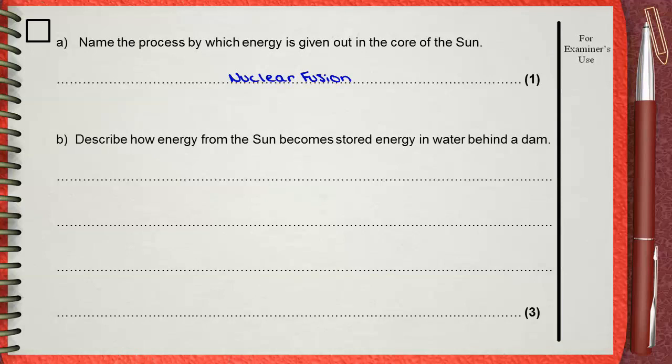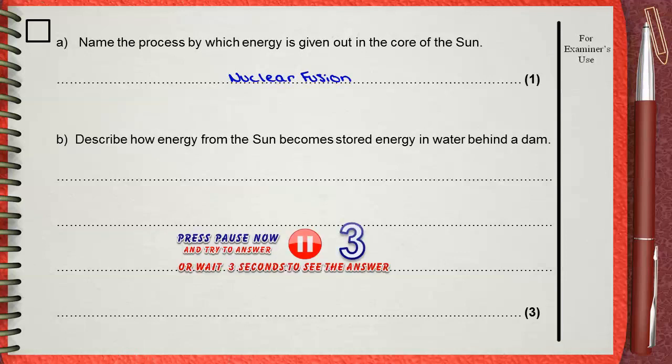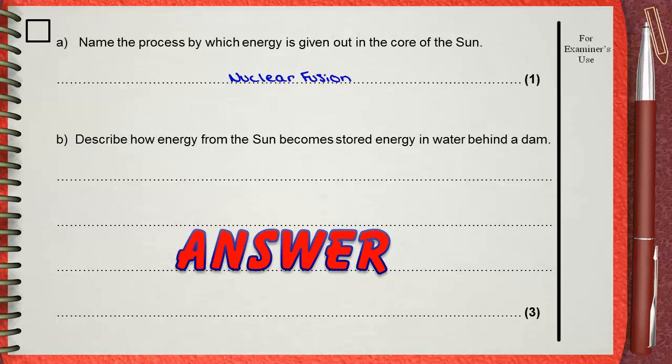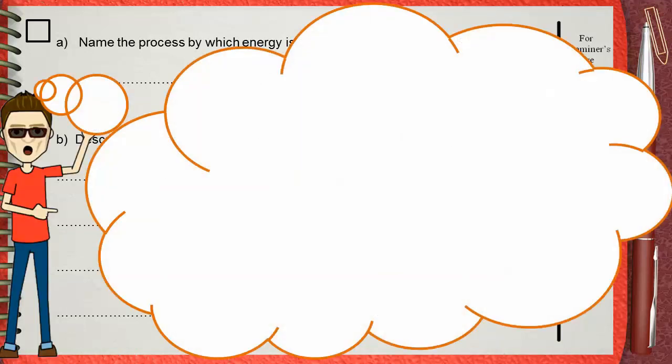Question b. Describe how energy from the Sun becomes stored energy in water behind the dam. To know how to answer this question, you must first understand the formation of rivers.